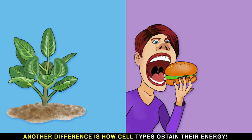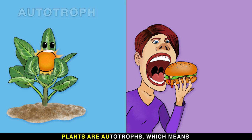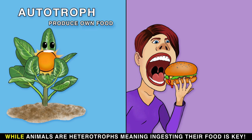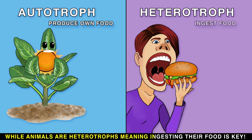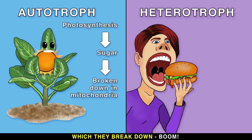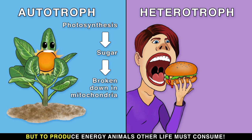Another difference is how cell types obtain their energy. Plants are autotrophs, which means that they produce their own food, while animals are heterotrophs, meaning ingesting their food is key. Plants photosynthesize to produce sugars which they break down, but to produce energy, animals must consume other life.